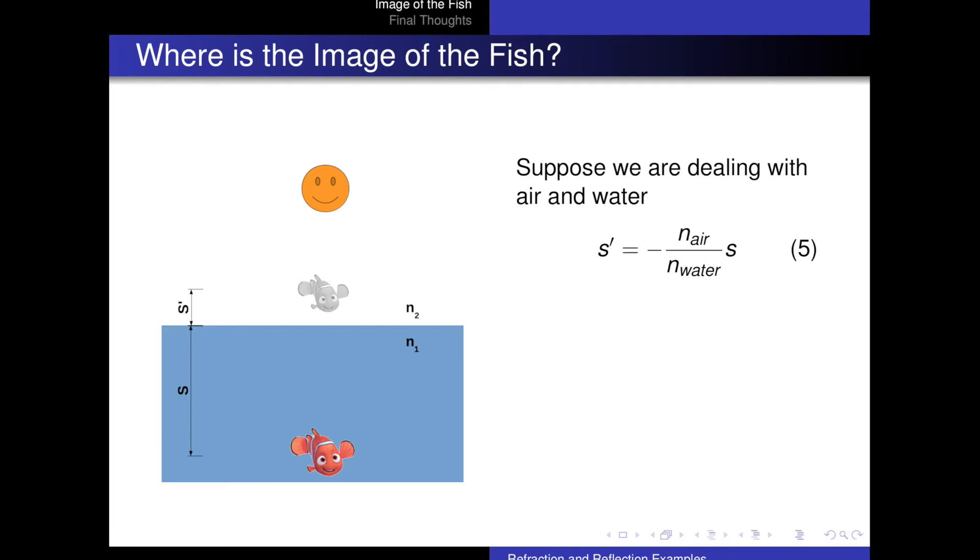So in this problem, suppose we're dealing with air and water. So instead of writing n1 and n2, I'm going to write n air and n water. The index of air is about 1. The index of water is about 4 thirds, 1.33. And doing a bit of algebra, I get s prime is equal to minus 3 fourths times s.